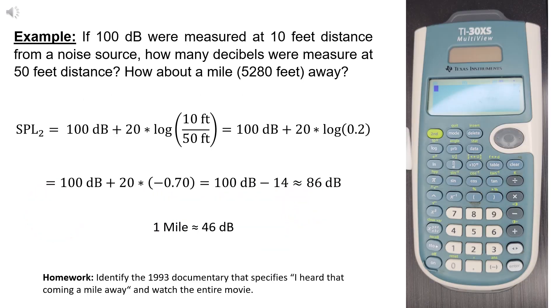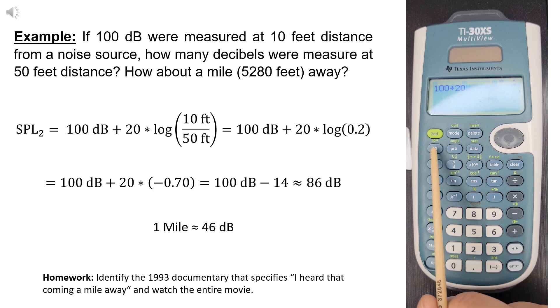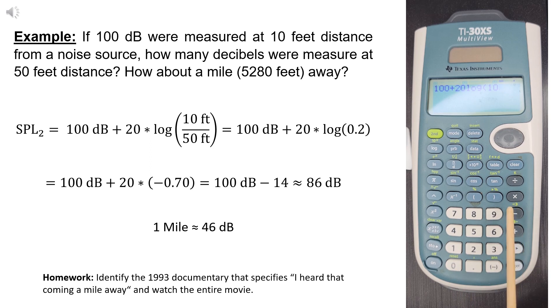For example, if 100 decibels were measured at 10 feet distance from a noise source, how many decibels were measured at 50 feet distance? And how about a mile away, which is 5,280 feet? The answer is sound pressure level equals 100 plus 20 times logarithm 10 divided by 50, close parenthesis equals 86 decibels. And for 1 mile is approximately 46 decibels.